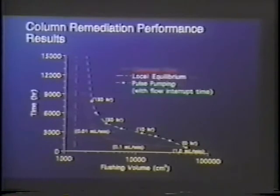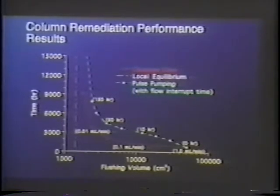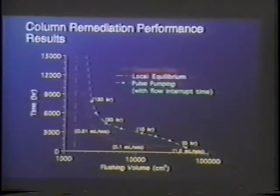The local equilibrium assumption is represented by a pink straight line — as you increase velocity you just move down that line, decreasing cleanup time without increasing volume. But our column did not behave in a local equilibrium fashion. Instead, as we increase the pumping rate we do decrease the time, but we start to pay a price — after some point we're not decreasing time much but we're really increasing the volume. Presumably you want to operate in the region minimizing both time and volume.